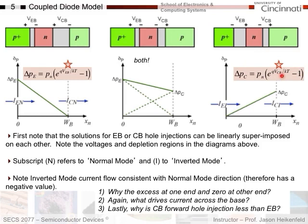If I try to forward bias both the emitter-base and the collector-base, I can add the two solutions by superposition and get one combined solution. The subscripts for current: I_N is emitter current in normal mode, and collector current in normal forward mode. Over here I have emitter current with subscript I for inverted mode, and collector current with subscript I for inverted mode. I know the holes are moving in a certain direction, so when we calculate these, they will have negative values — but for now we keep them all pointed in the same direction in positive X, knowing those have negative values.